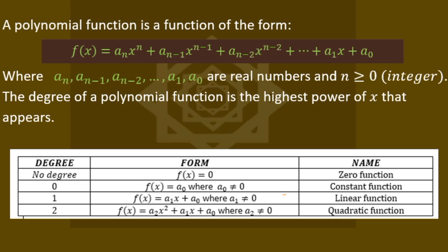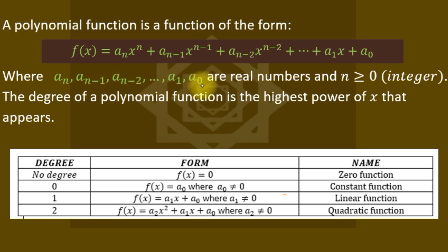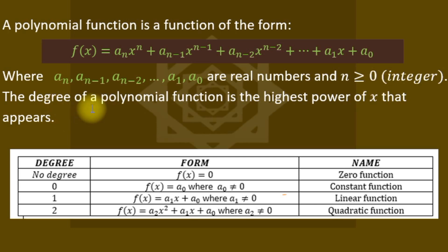We're going to identify a polynomial. A polynomial function is a function of the form highlighted in green, where the coefficients — a subscript n, n minus 1, n minus 2, down to 0 — must be real numbers, not complex numbers. The highest power, which is n, must be a positive integer starting from zero.